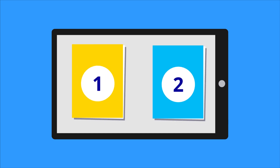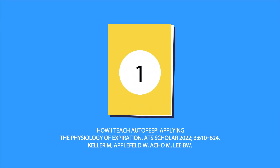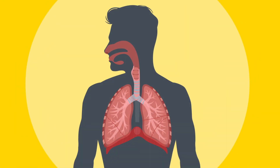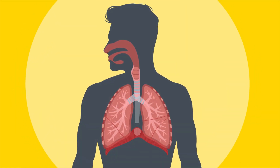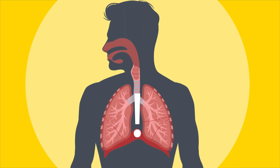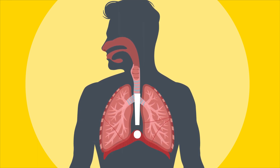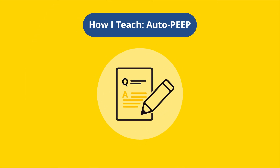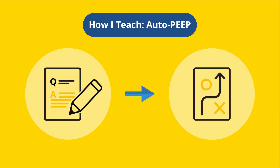The latest issue of ATS Scholar contains our first two How I Teach articles. One of them outlines effective methods to instruct trainees in the intensive care unit on advanced concepts related to AutoPEEP. AutoPEEP is a serious complication in mechanically ventilated patients caused by accumulation of air in the lungs due to incomplete expiration. The educators explain why they prefer to teach AutoPEEP by asking trainees a series of manageable questions, then outlining specific concepts helpful for better comprehension of the topic.